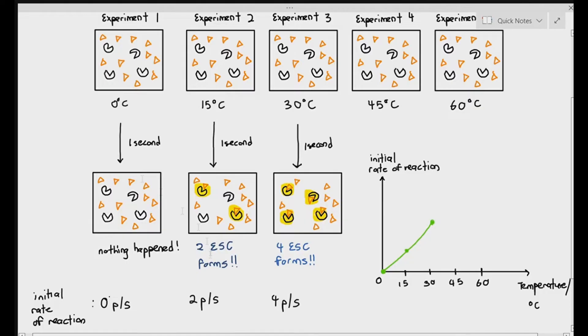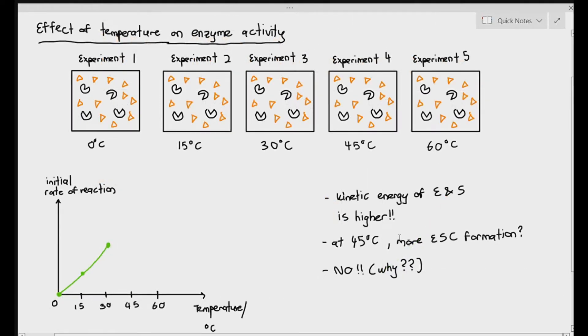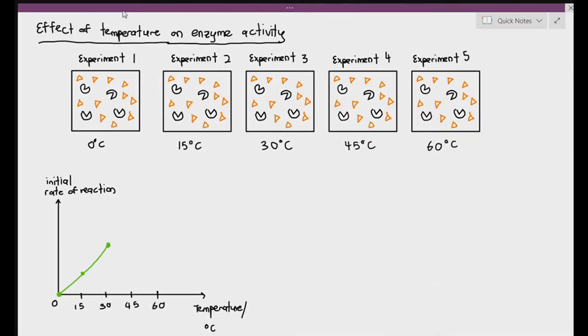Now, for experiment number four, what do you think is going to happen to the initial rate of reaction? If you look at my graph, you might assume, based on the line, it looks like it should be going up even more. But here's where something weird happens. When you conducted the experiment, there were no ES complex formation at all after one second. Why can't the enzymes and substrates form the ES complex?